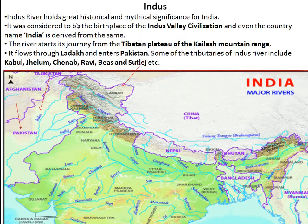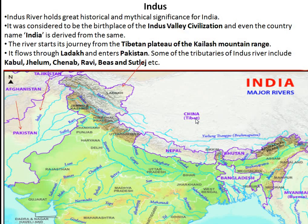Next is the Indus river, which holds great historical and mythical significance for India. It is the birthplace of the Indus Valley Civilization, and the country's name 'India' is derived from it. The river starts its journey from the Tibetan plateau of the Kailash mountain range, flows through Ladakh, and enters Pakistan. Some of its tributaries include Kabul, Jhelum, Chenab, Ravi, Beas, and Sutlej.